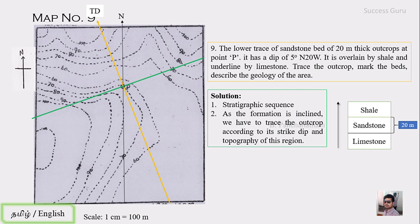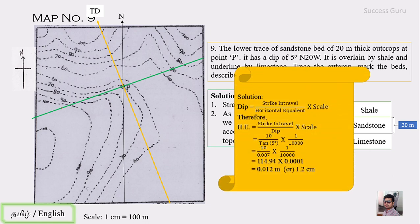Next, we find the spacing between successive strikes, which is the horizontal equivalent. We use the formula: tan(dip) = strike interval / horizontal equivalent × scale. The contour interval for this map is 10 meters, so strike interval = 10 meters. The scale is 1 cm = 100 m (i.e., 1:10,000), and dip = 5 degrees. Solving for horizontal equivalent gives 1.2 centimeters.